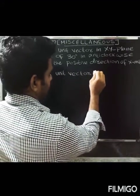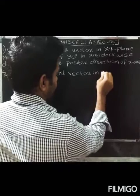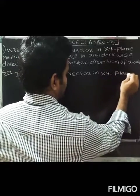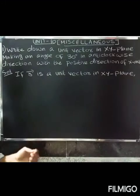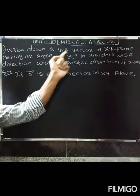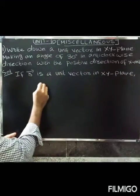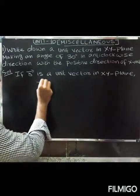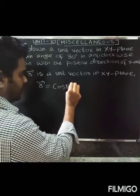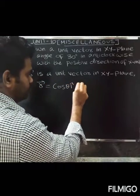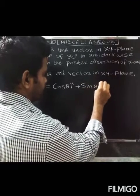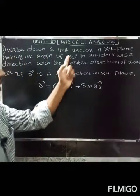If r vector is a unit vector in the XY plane, then r vector equals the formula: cosθ î plus sinθ ĵ. So the theta value here is 30 degrees.